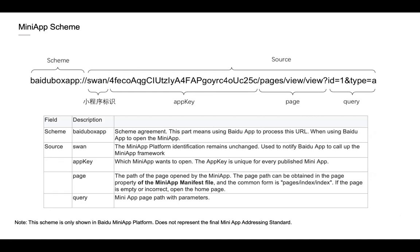What is the MiniApp schema? This is an example of the MiniApp schema. The schema describes which app to process and the URL to open the MiniApp. The MiniApp App ID decides which MiniApp to open — it is unique for every published MiniApp. The path and query part is similar to URI scheme standards, distinguishing which page to load and what parameters to pass.